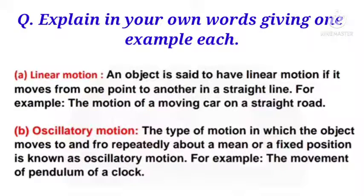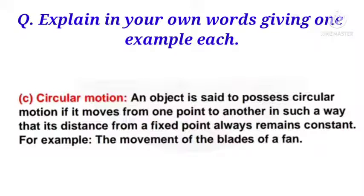Explain in your own words giving one example each. First is linear motion with an example. Second is oscillatory motion with an example. Third is circular motion where you can see the definition and one example of how the circular motion we can see in our normal surroundings, like a fan.